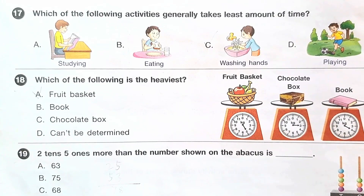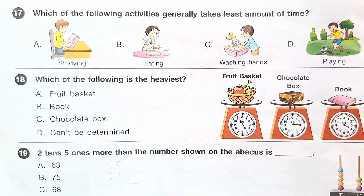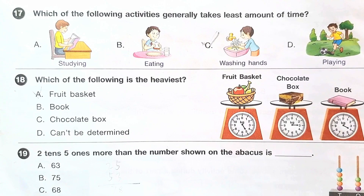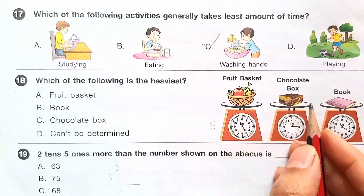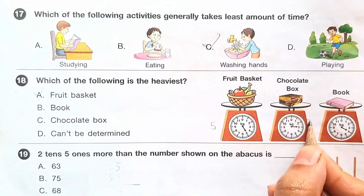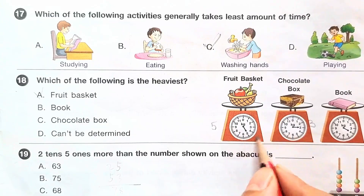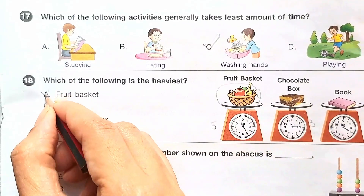Question number 17: which of the following is the heaviest? The fruit basket is 5 cages, the chocolate box is 3 cages, and the book is 4 cages. Among these, the fruit basket is the heaviest. So the answer is option A.